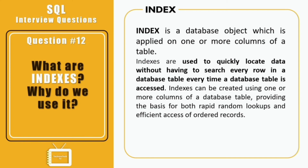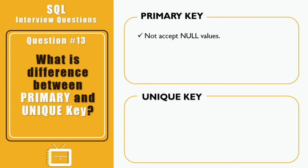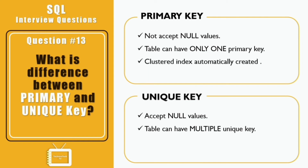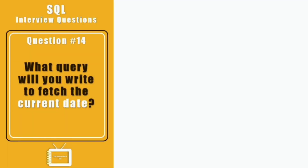Question thirteen: what is the difference between a primary key and a unique key? A primary key will not accept null values, whereas a unique key can accept null values. A table can have only one primary key, whereas there can be multiple unique keys on a table. A clustered index is automatically created when a primary key is defined, whereas a unique key generates a non-clustered index.